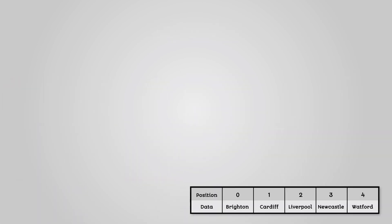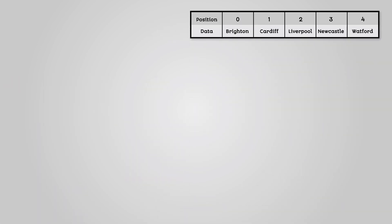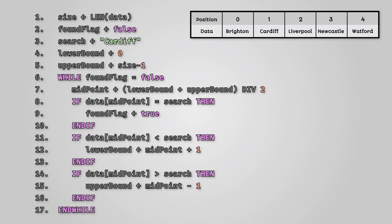Let's assume you are looking for the word Cardiff in an array called data. The pseudocode for this algorithm looks like this.